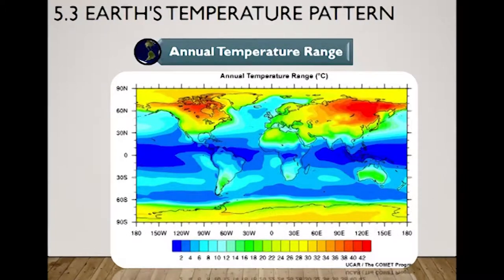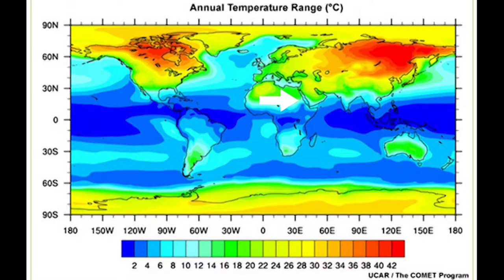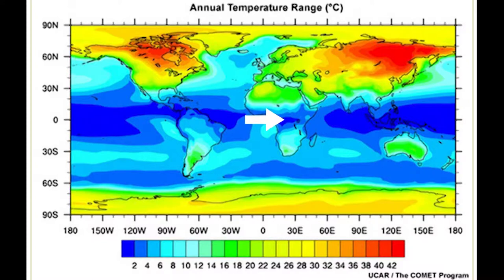When you combine subtracting summer temperatures with winter temperatures, you get the annual temperature range. A major characteristic you'll see is areas over the continents with very large temperature ranges. Look over the United States — the largest in the world is Siberia, where the temperature range can be greater than 100 degrees Celsius.